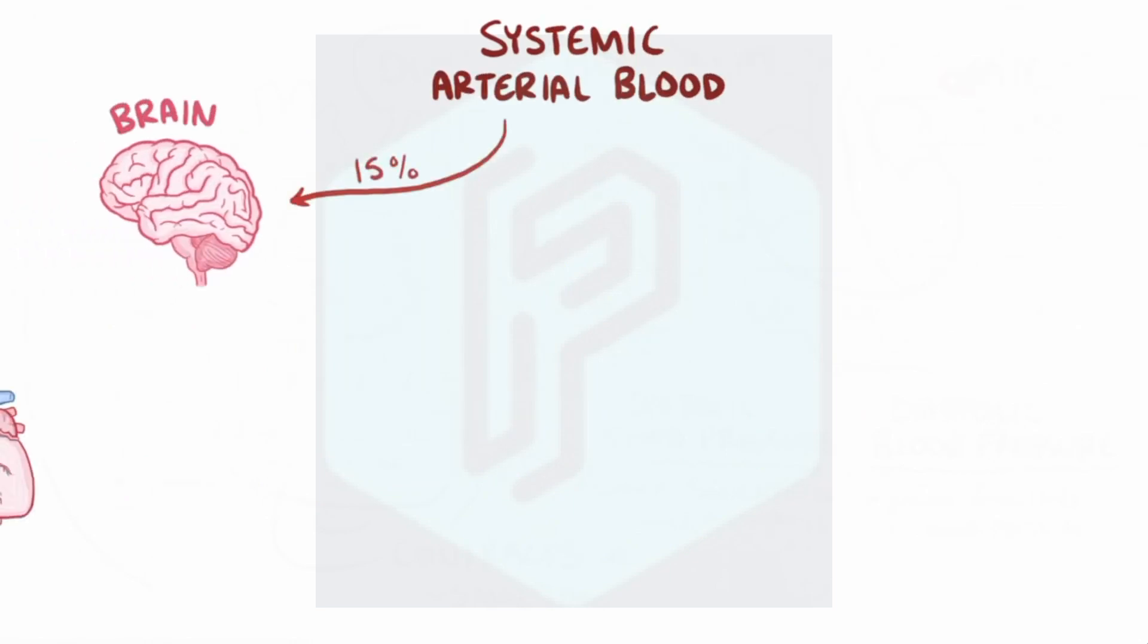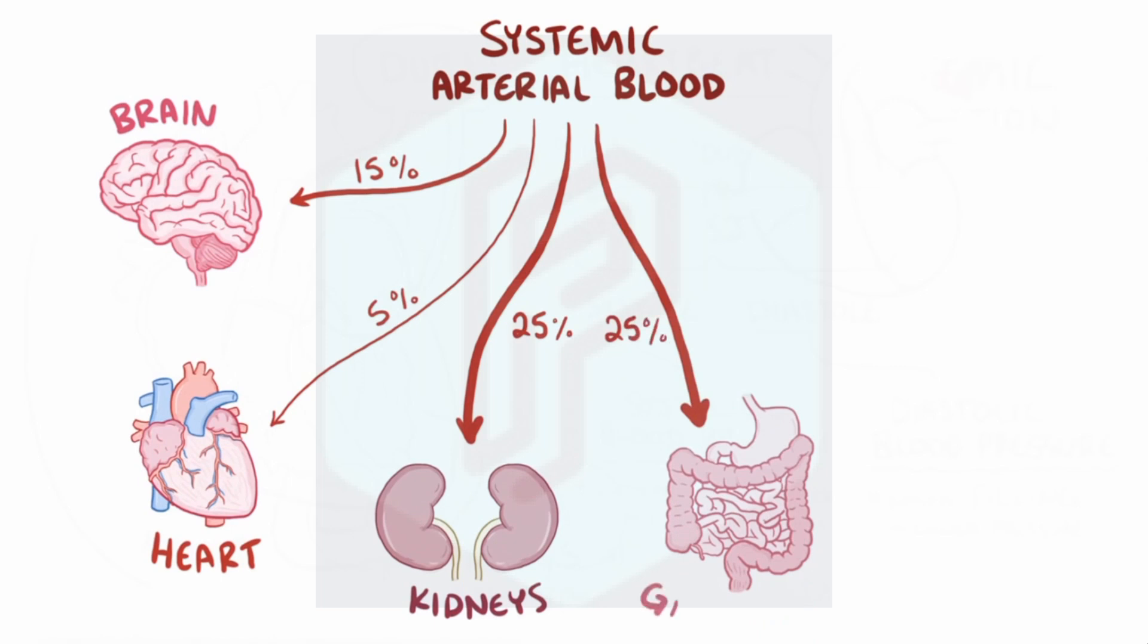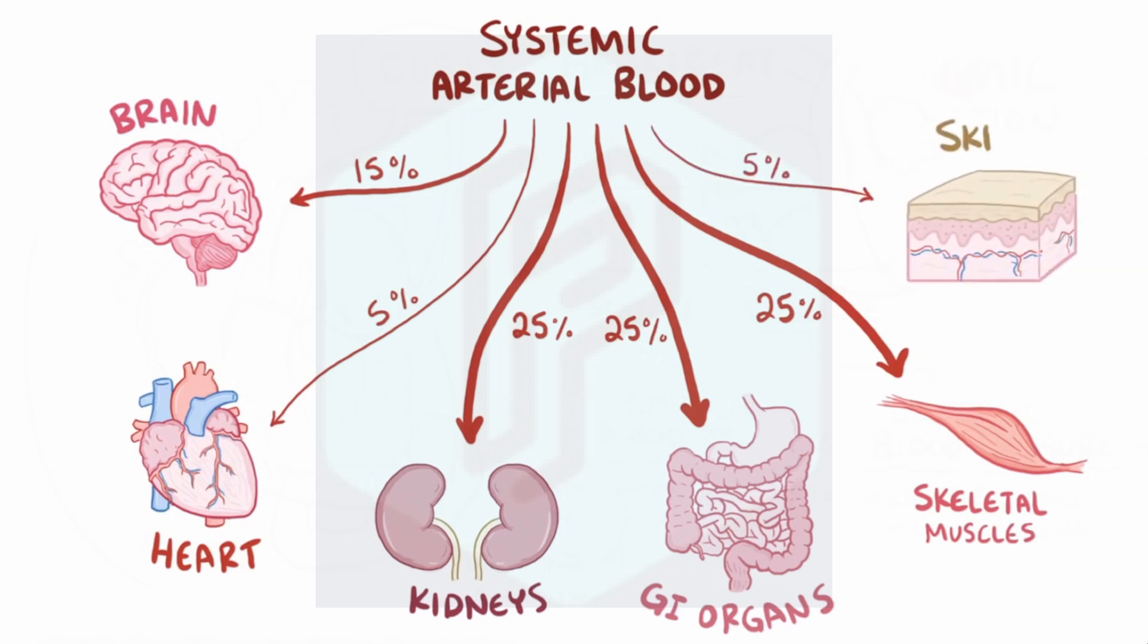Now in terms of where all that systemic arterial blood goes, about 15% goes to the brain, 5% nourishes the heart itself, 25% goes to the kidneys, another 25% goes to the gastrointestinal organs, yet another 25% goes to the skeletal muscles, and the last 5% goes to the skin. These numbers can obviously change, for example during exercise, but this does give you a general sense of things.